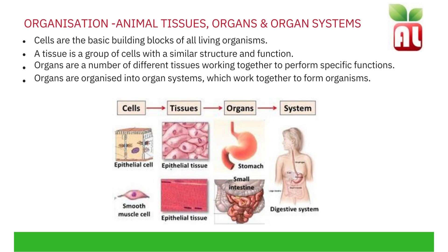Animal tissues, organs and organ systems. Cells are the basic building blocks for all living organisms. A tissue is a group of cells with a similar structure and function. Organs are a number of different tissues working together to perform specific functions. Organs are organized into organ systems which work together to form organisms.